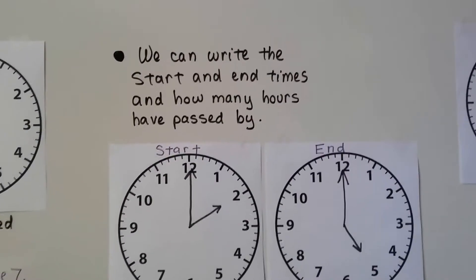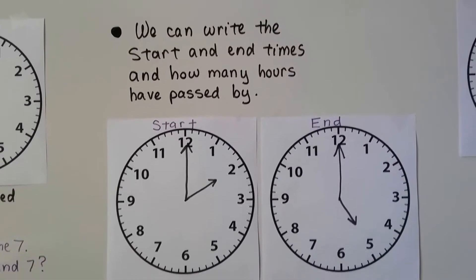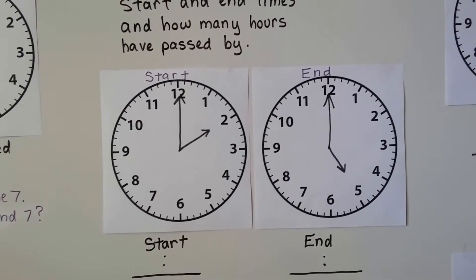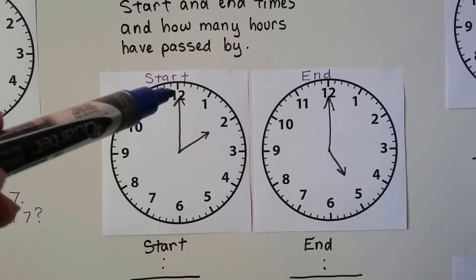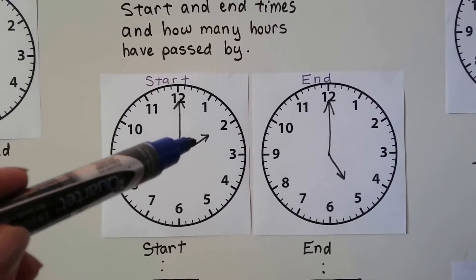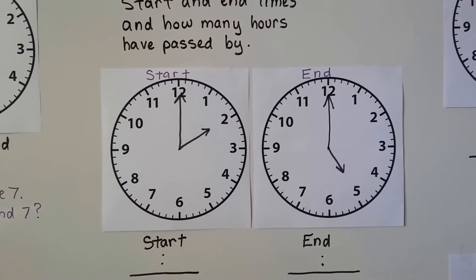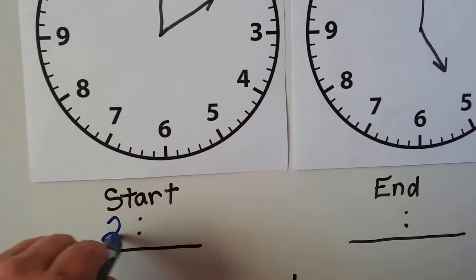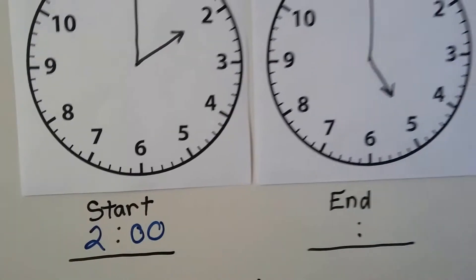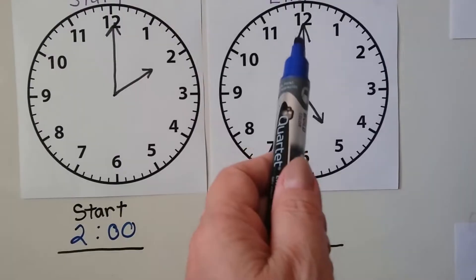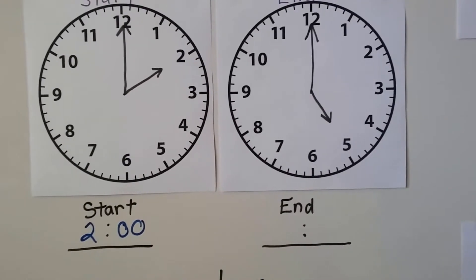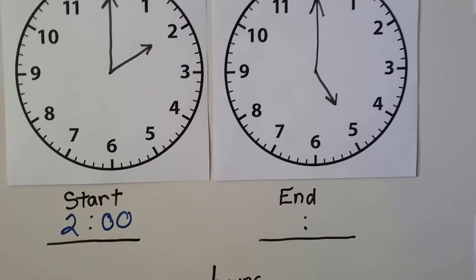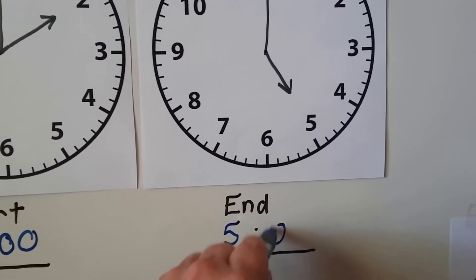We can write the start and end times and figure out how many hours have passed. For the start time, when the minute hand is on the twelve it's an o'clock, and the hour hand tells us which o'clock — so this is two o'clock. For the end time, the minute hand is on the twelve so we know it's o'clock, and the hour hand is pointing to the five, so it must be five o'clock.